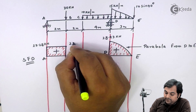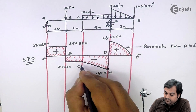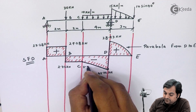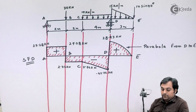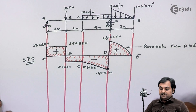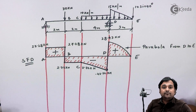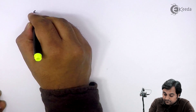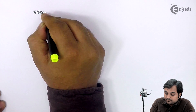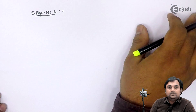Between A to B it is constant, and similarly between B to C we have constant shear force. This is the shear force diagram. After this I will draw the bending moment diagram, and for that we should have bending moment values, so I'll write down Step Number Three: bending moment calculations.